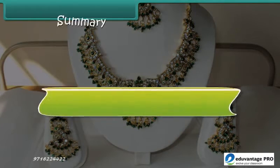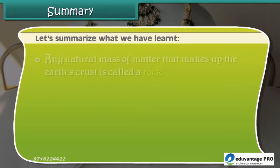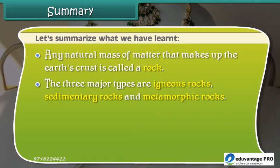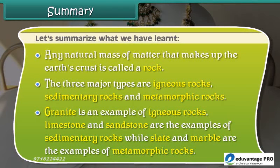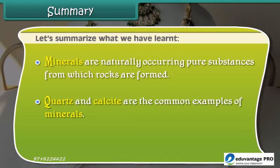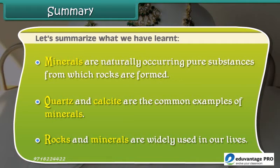Summary. Let us summarize what we have learned. Any natural mass of matter that makes up the earth's crust is called a rock. The three major types are igneous rocks, sedimentary rocks, and metamorphic rocks. Granite is an example of igneous rocks. Limestone and sandstone are examples of sedimentary rocks, while slate and marble are examples of metamorphic rocks. Minerals are naturally occurring pure substances from which rocks are formed. Quartz and calcite are common examples of minerals. Rocks and minerals are widely used in our lives.